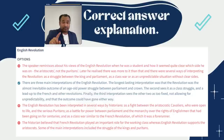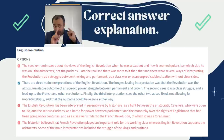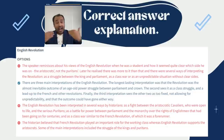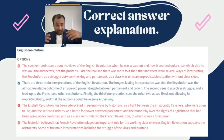Let me look at the answers and explain why some of you chose wrong. Option A: 'The speaker reminisces his views of the English Revolution when he was a student.' Did you hear anything about when he was a student? No. The examiner has added extra information — that's wrong. Cross it out straight away. Option B: 'There are three main interpretations of the English Revolution.' Did you hear that? Yes, you did — so that could be the answer.